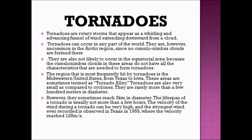Tornadoes are rotary storms appearing as whirling, advancing funnels of wind extending downward from clouds. Tornadoes are not likely to occur in the equatorial zone because cumulonimbus clouds in those areas lack all the necessary characteristics to form tornadoes. The Philippines is within the equatorial zone, so we do not experience tornadoes. The region most frequently hit by tornadoes is the United States, in an area called Tornado Alley.